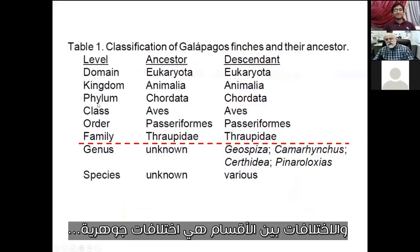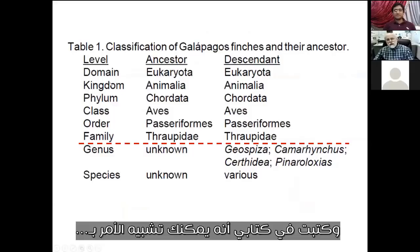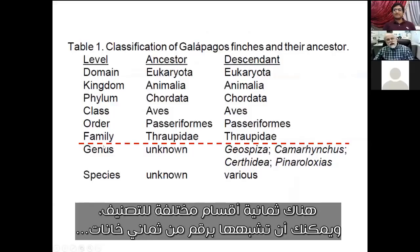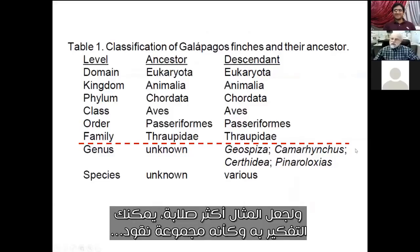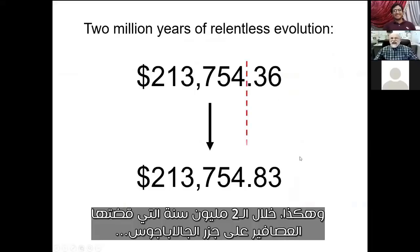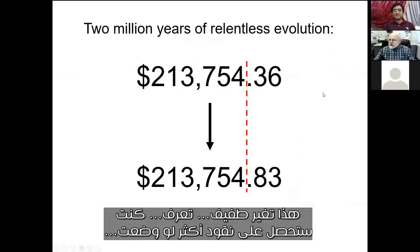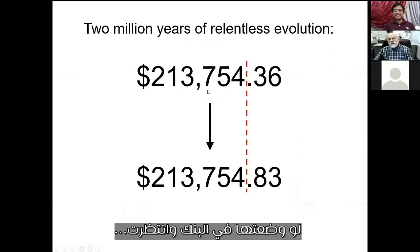The different categories are substantially different; they require much greater information to pass from one to another. In the book I write that you can represent it by an eight-digit number — there are eight classification categories. To make it concrete, you can think of it in terms of a sum of money in hundreds of thousands of dollars and also change, cents. In two million years that the finches have been on the Galapagos islands, they've only changed in the pennies and dimes columns — trivial change. You'd get more money if you put your money in a bank and waited.